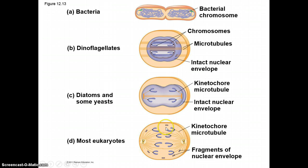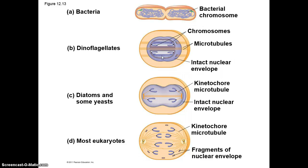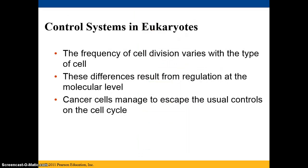This is how most eukaryotes end up dividing. You can see that these two have intact nuclear envelopes, and this one is further divided between top and bottom — similar to, yet also different from, the mitosis we're used to.